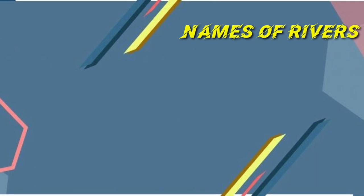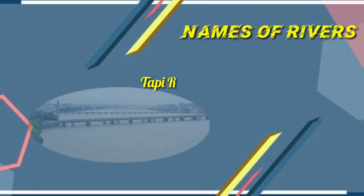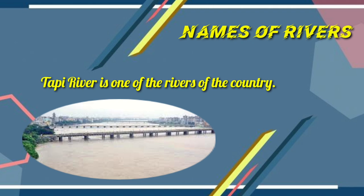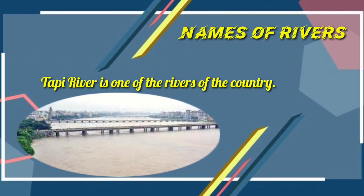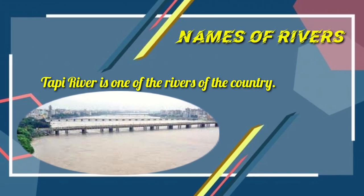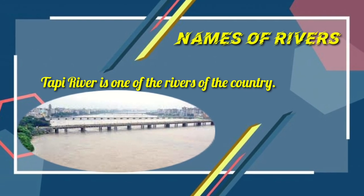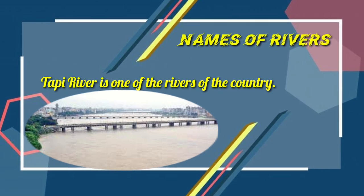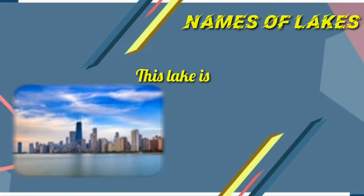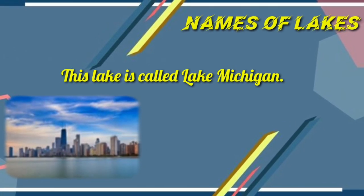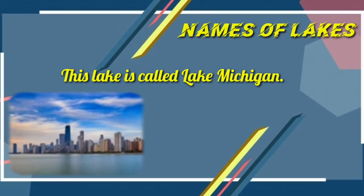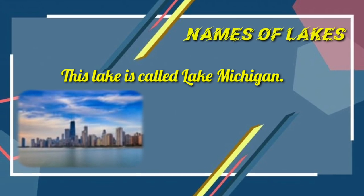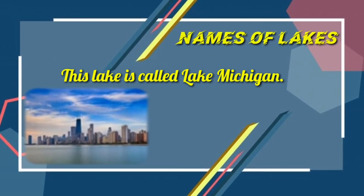Names of rivers — Example: 'Tuppy River is one of the rivers of the country.' The Tuppy River is the title and a proper noun, so use a capital letter. But when 'river' is used generically and not as part of a title, use a lowercase letter. Names of lakes — 'This lake is called Lake Michigan.' The title 'Lake Michigan' uses capital letters, but 'lake' used normally takes a small letter.